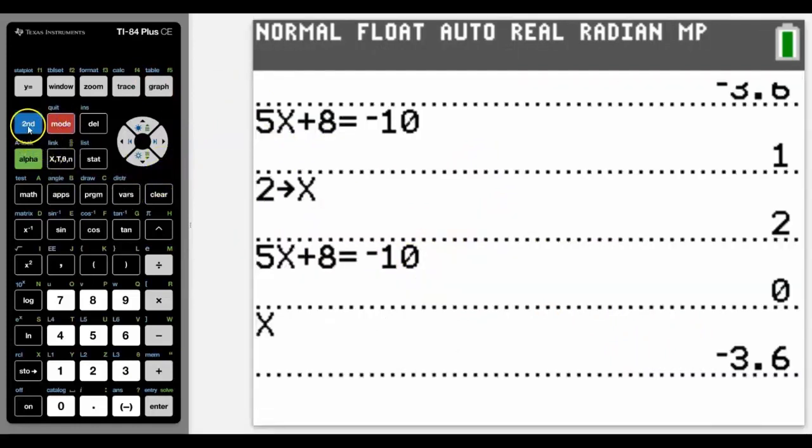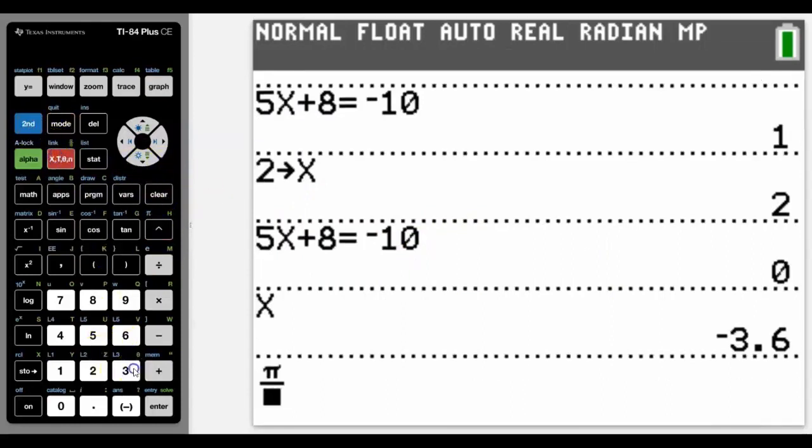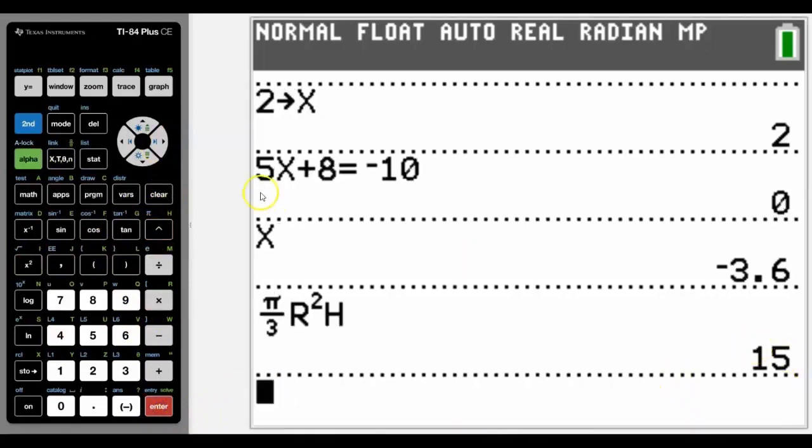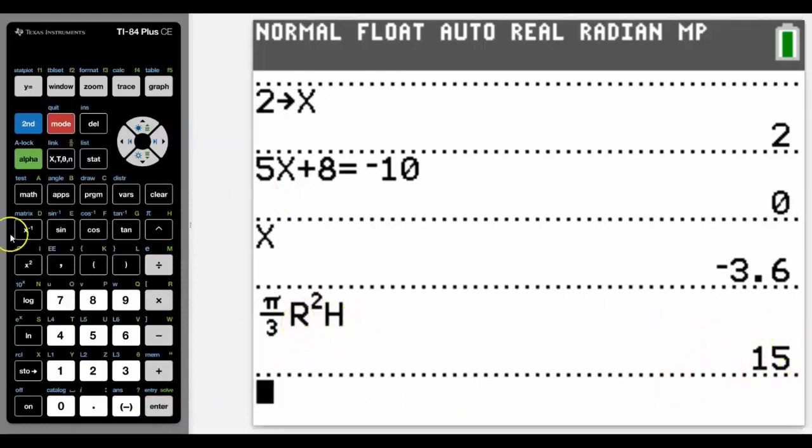Because as I said to you, if we go back into normal calculator screen now, those values will actually be stored as R and as H. So if we actually use them both, it should give us an answer of, yes, 15. Brilliant. Now we know there's an infinite number of values for R and H that will give a volume of 15.